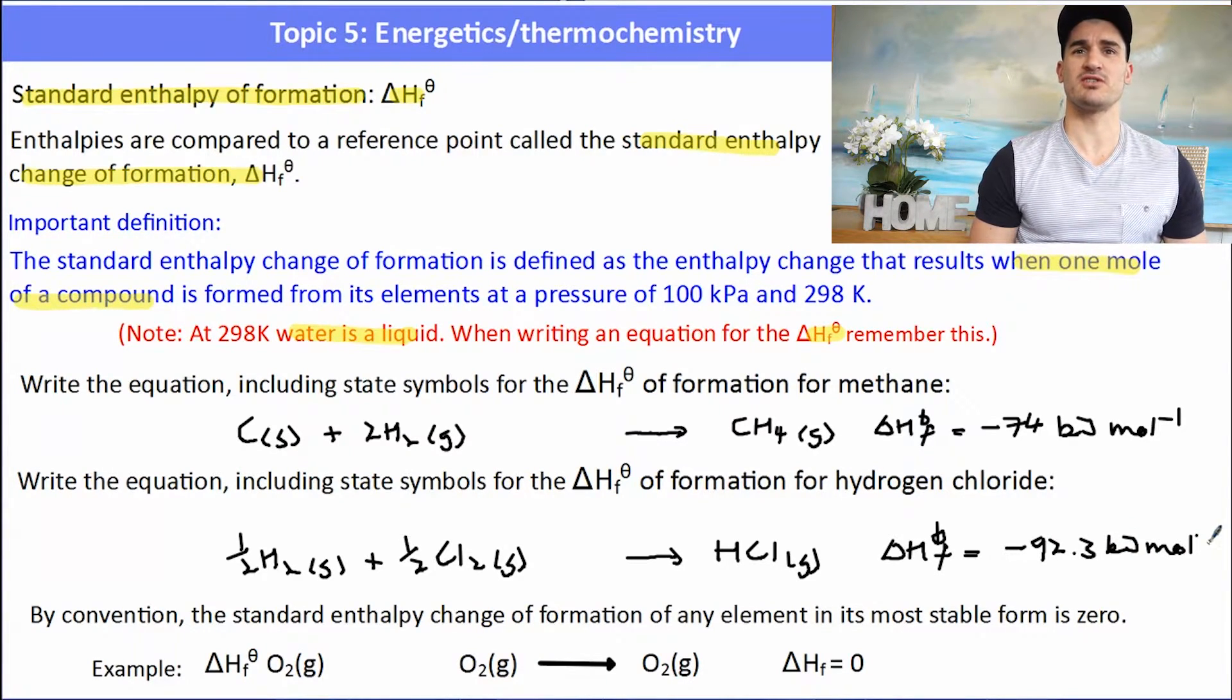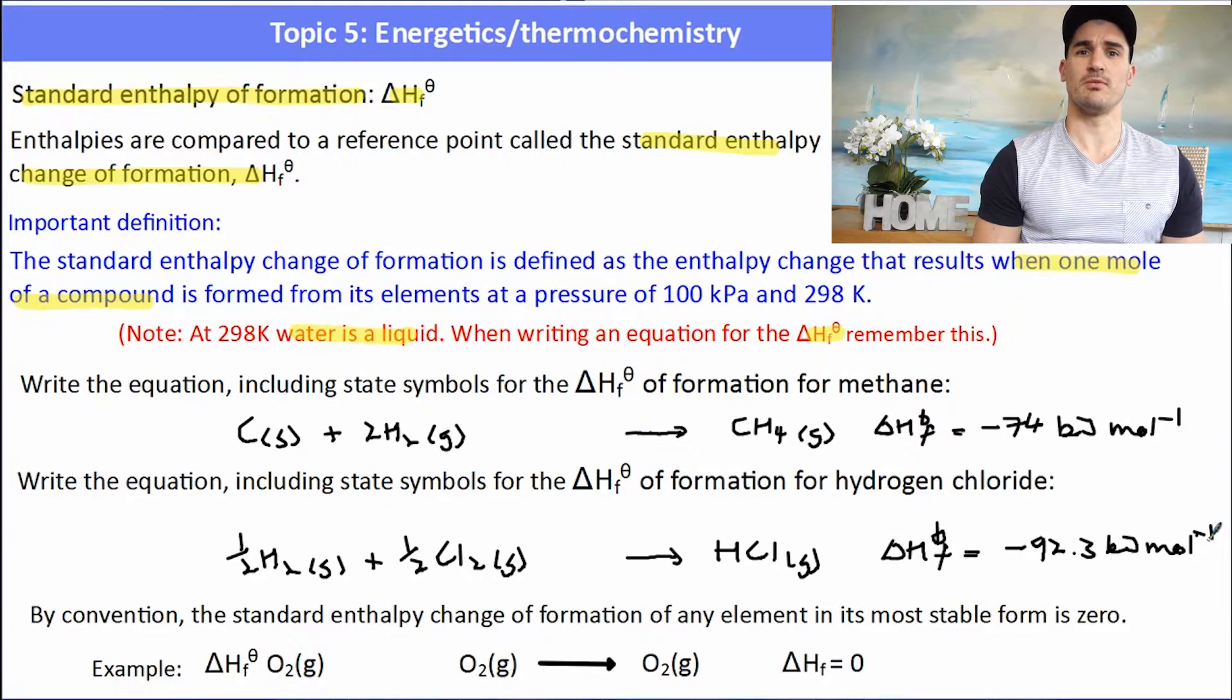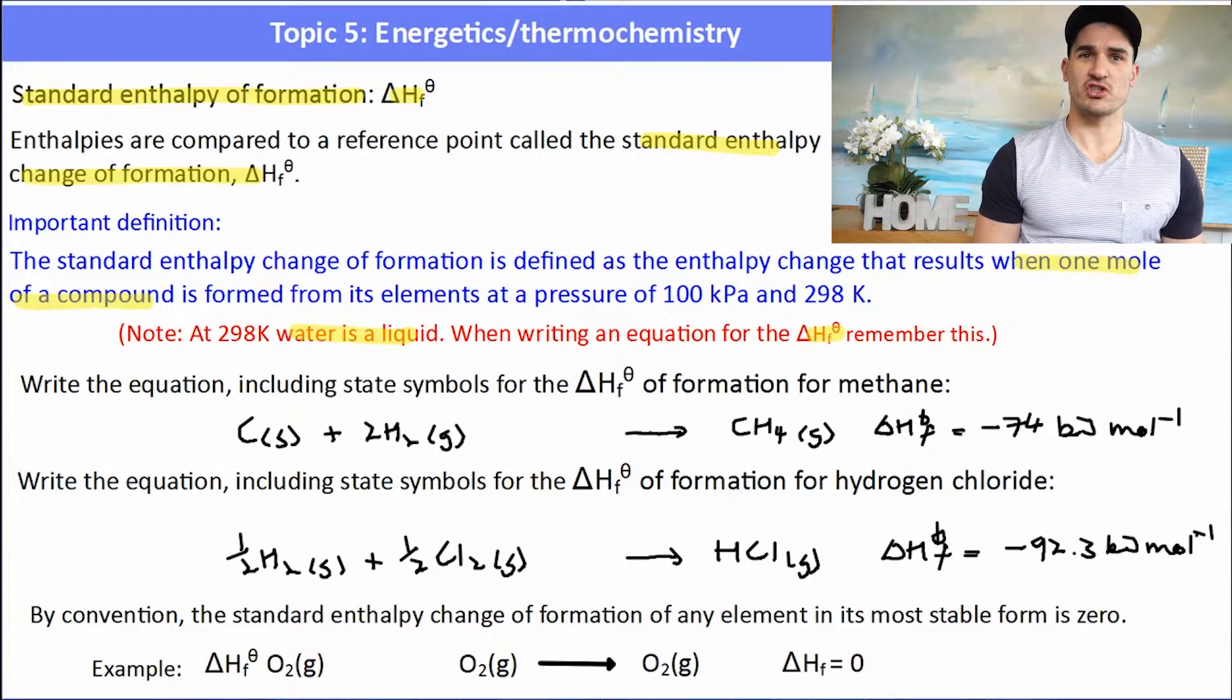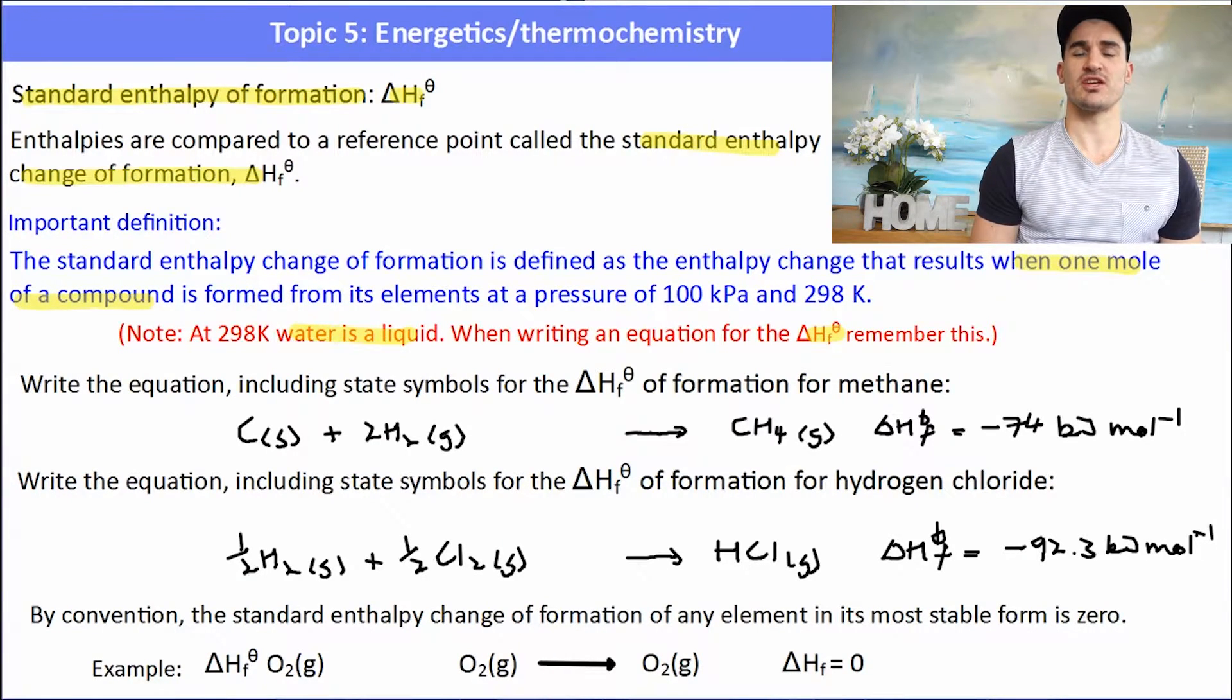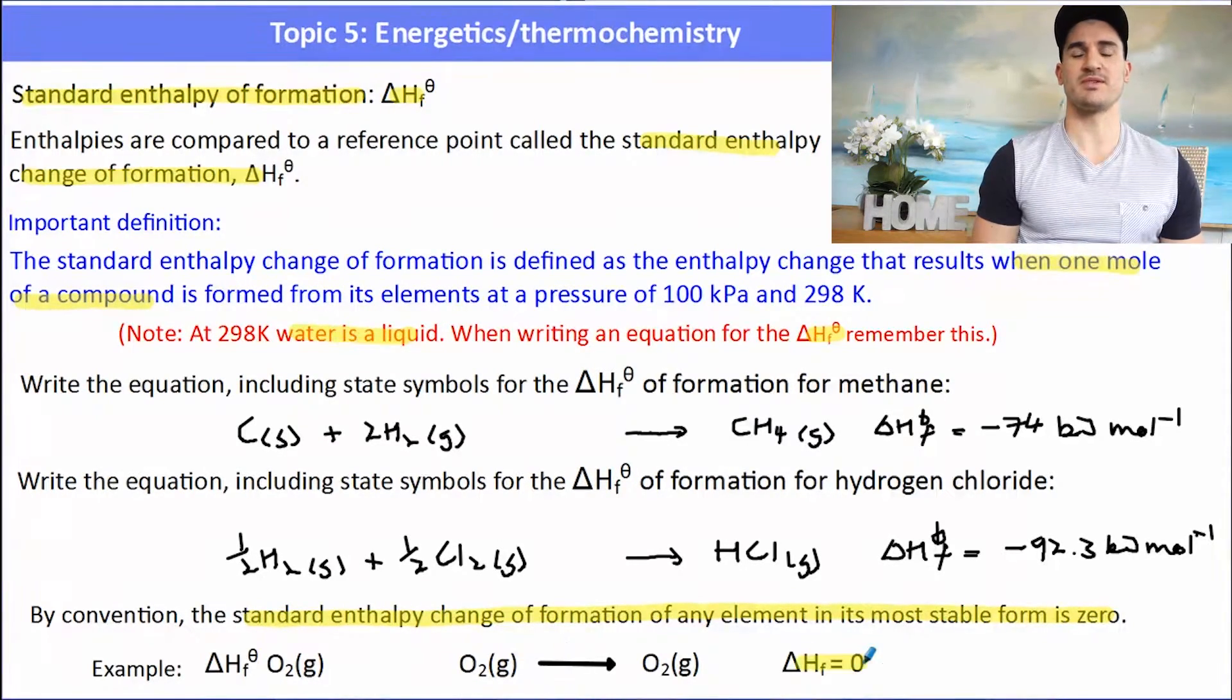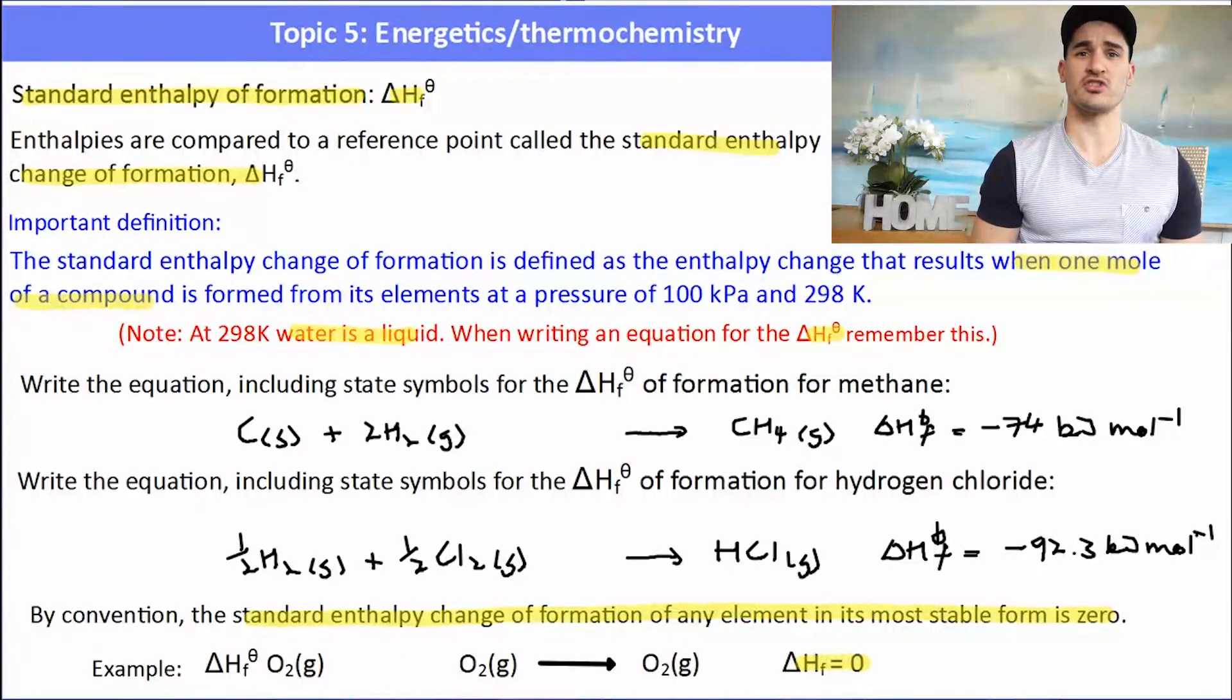Just by convention, any delta H formation of an element is zero. So the delta H formation of an element in its most stable state will always be zero, and that's really important for oxygen, especially when we do delta Hc.